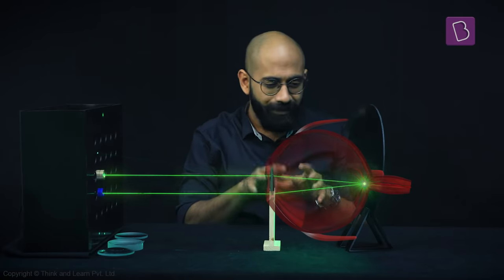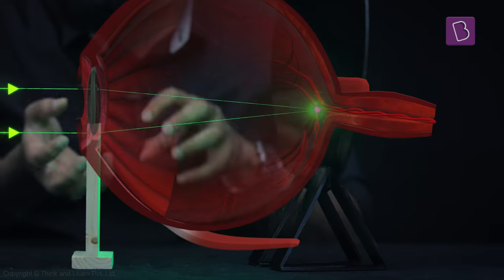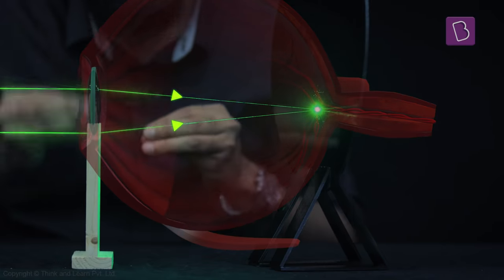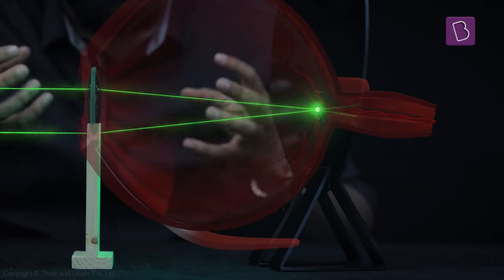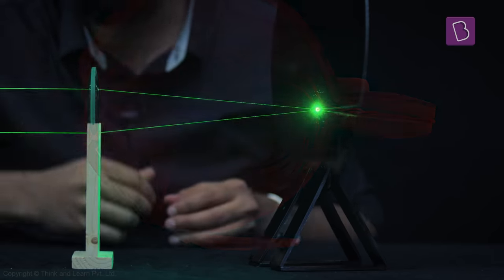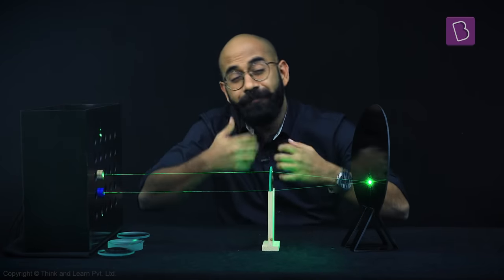Now if you look closely, this is what happens in the case of a healthy eye. The rays come from objects and then the eye lens converges those rays to a point on the retina. And therefore, this person sees a clear image. But then, sometimes there are defects.